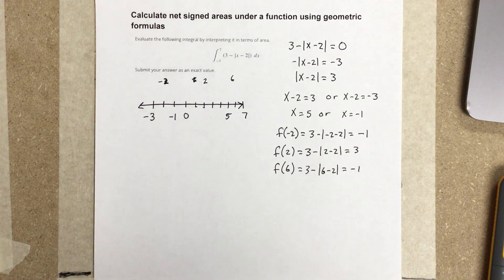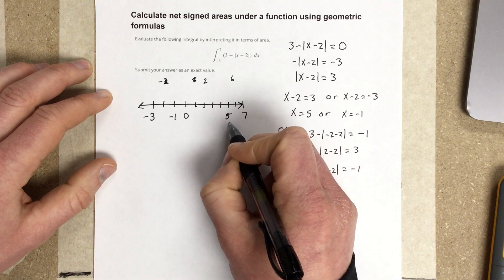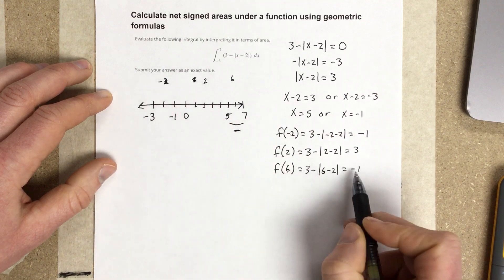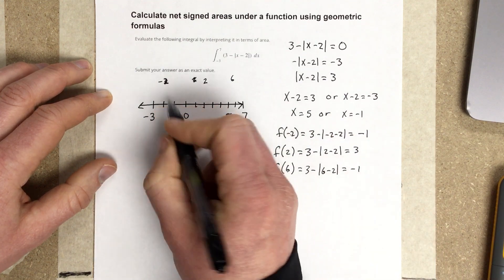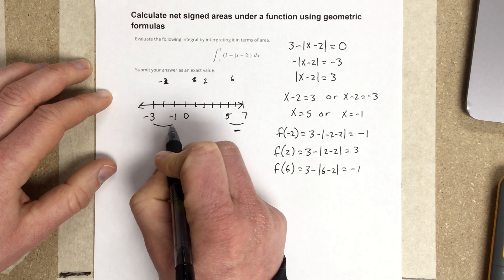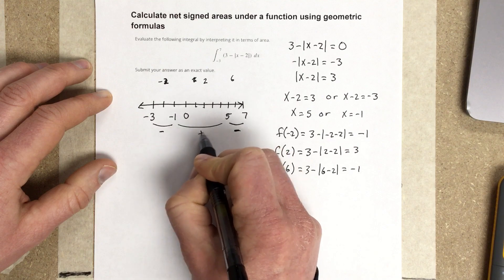So, what it's telling me is these outside two pieces. So, between 5 and 7, this is going to be negative area, because I'm getting negative numbers there. And, the same thing is true between negative 3 and negative 1. That's negative area. And then, in between here, I'm going to get some positive area.